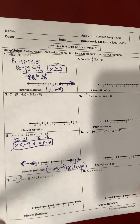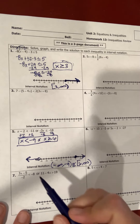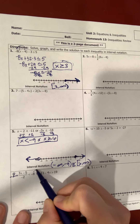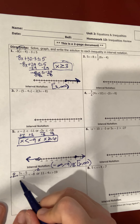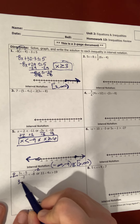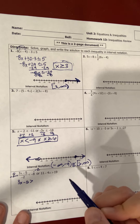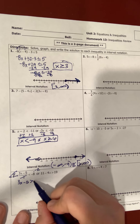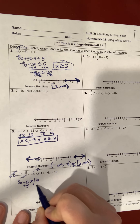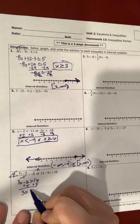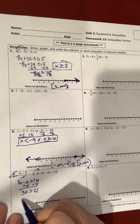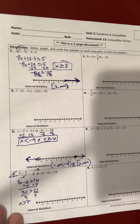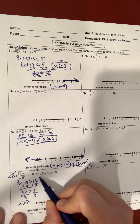Let's take a look at number 7. I have to get rid of the fraction here, so I'm going to multiply both sides by negative 2. Remember, when I multiply both sides by a negative, I must switch that sign. Negative 2 cancels out, and negative 8 times negative 2 is positive 16. I add 5 to both sides and get 3x is greater than 21. When I divide both sides by 3, I get x is greater than 7.